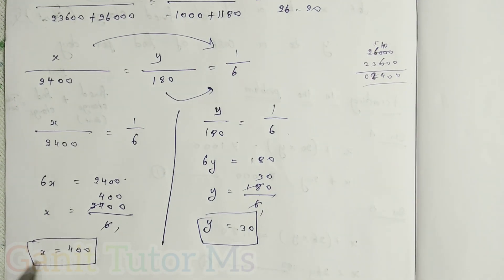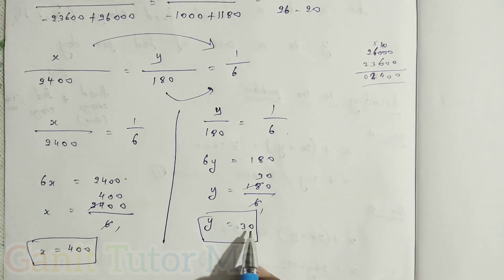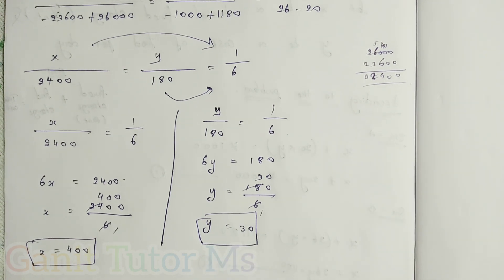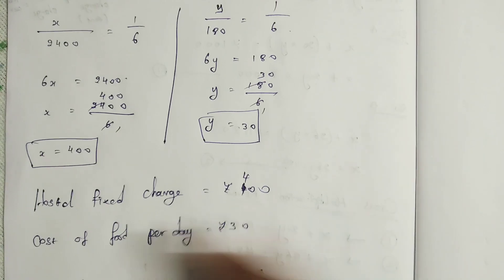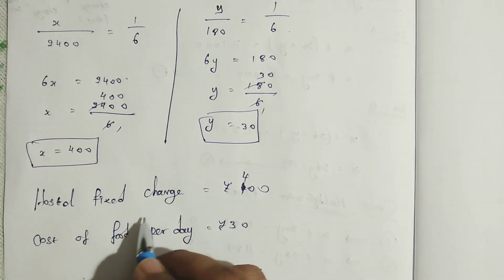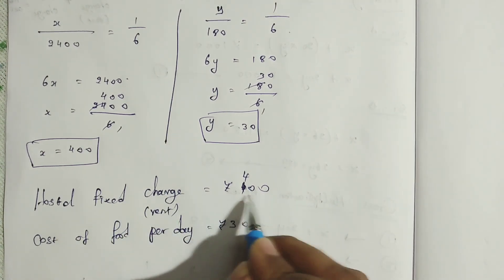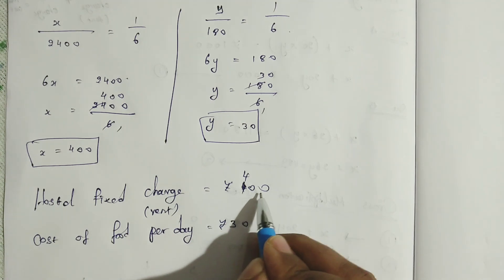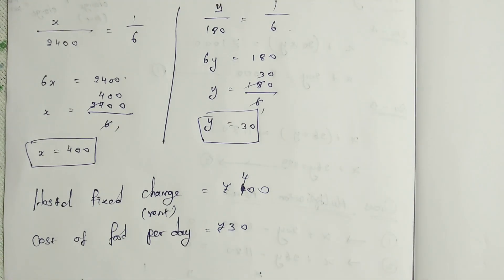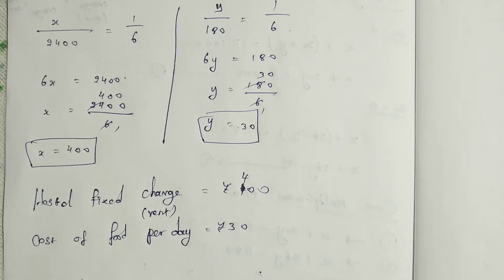So we have found both values. The fixed charge of the hostel is 400 rupees — that means the rent is 400 rupees. The cost of food per day is 30 rupees. Hence, we have found the hostel fixed charge — rent — is 400 rupees, and the cost of food per day is 30 rupees.